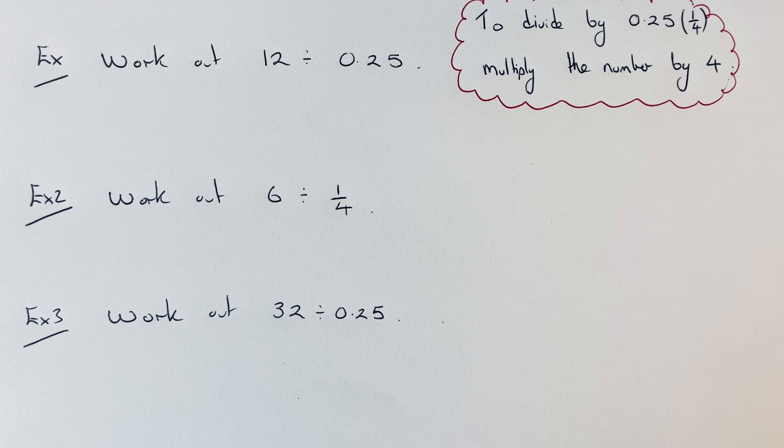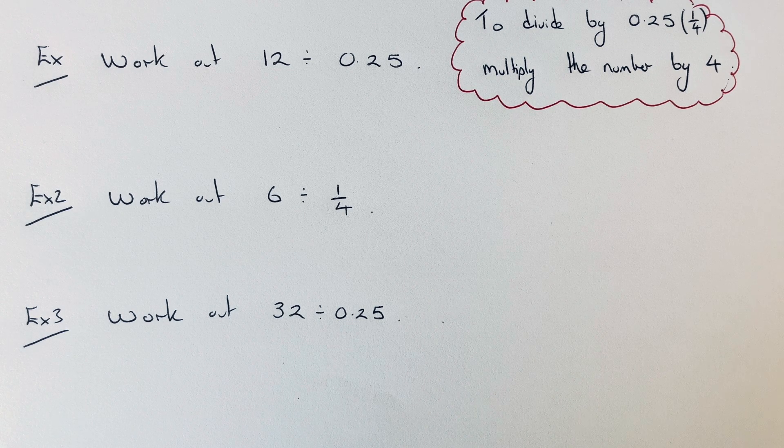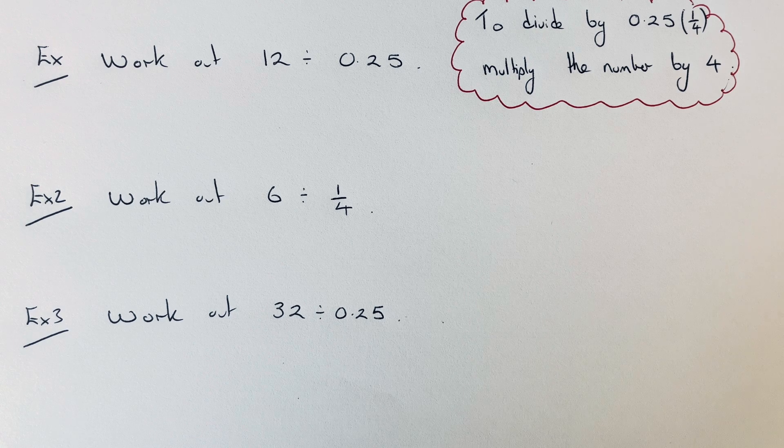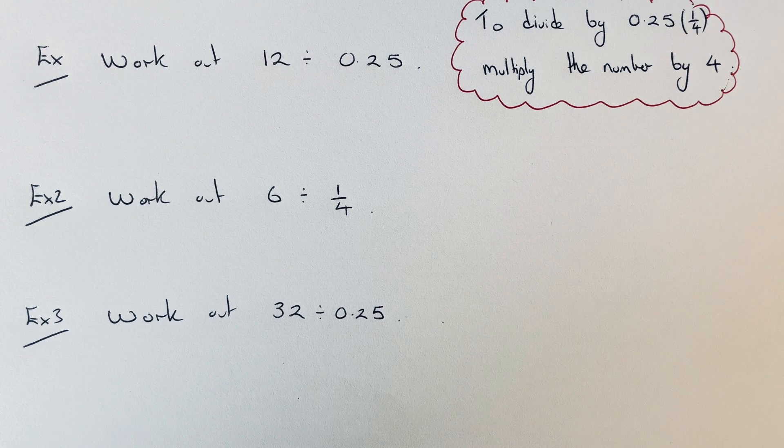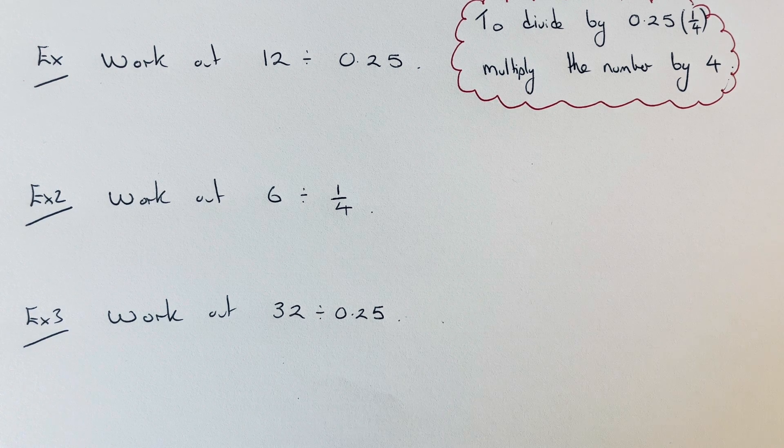And the quick way you do this is to multiply the number that you are dividing by 4. This is because there are 4 quarters in a whole one.